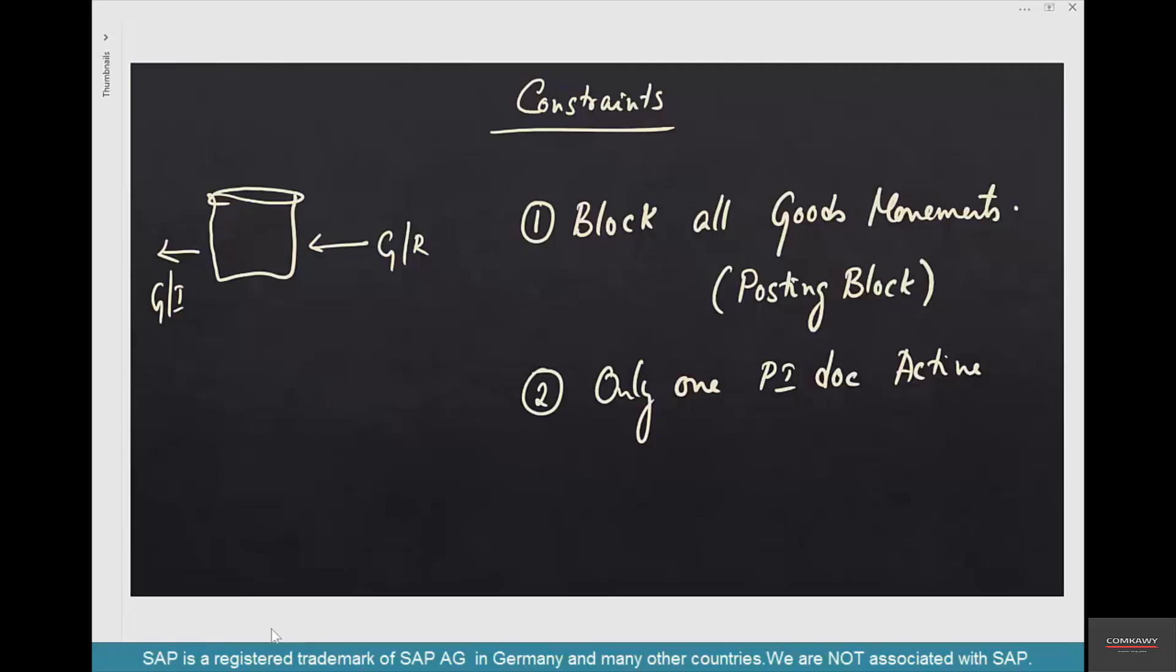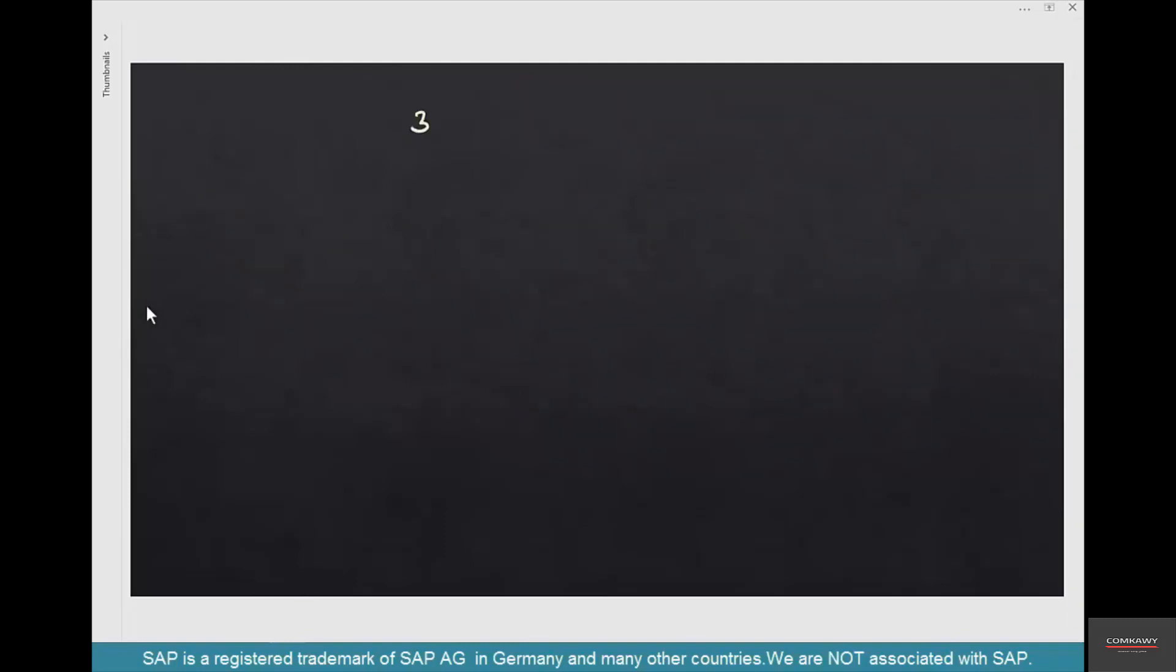The third constraint is a little more involved. Let me give you an example. The third constraint is called freezing book inventory. With this method, you can allow goods receipts and goods issues and still keep counting.